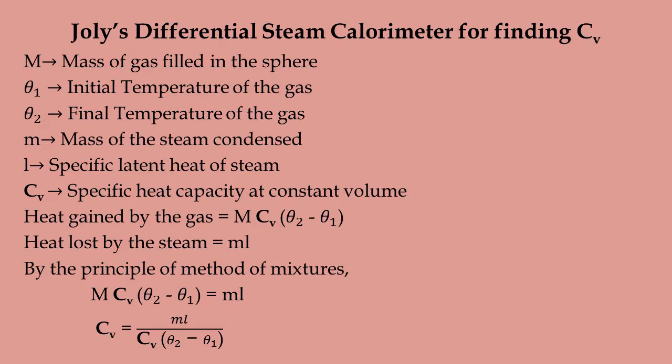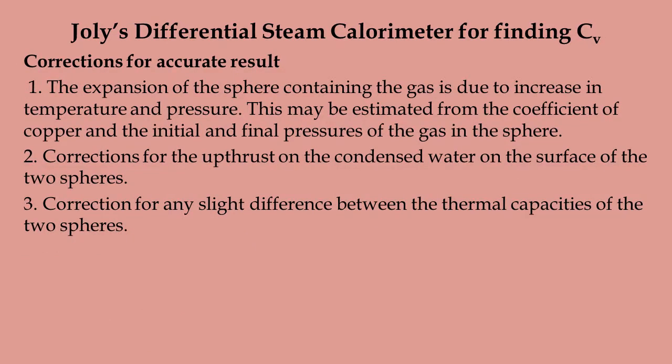This is the expression for specific heat capacity at constant volume. Corrections for accurate results include: the expansion of the sphere due to increase in temperature and pressure, estimated from the coefficient of expansion of copper and initial and final pressures; corrections for upthrust on condensed water on the surface of the two spheres; and correction for any slight difference between the thermal capacities of the two spheres. Thank you.